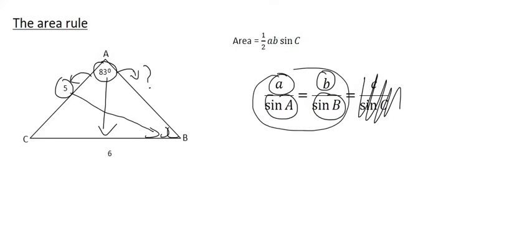So I'm going to use A, which is going to be, I'm going to use the 6 over the sin of its angle, which is 83. And in the place of B, I'm going to use 5 over the sin of x.